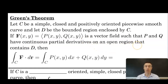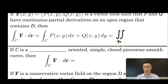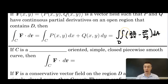Now, what is Green's Theorem? Let C be a simple, closed, positively oriented piecewise smooth curve, and let D be the bounded region enclosed by C. If the vector field F with components P and Q has continuous partial derivatives on an open region containing D, then the line integral of the vector field equals the double integral over D of (∂Q/∂x − ∂P/∂y) dA. This works because we're integrating derivatives — the Fundamental Theorem of Calculus is in play.